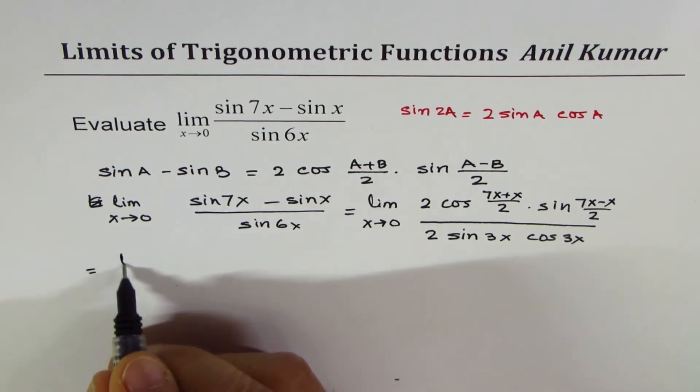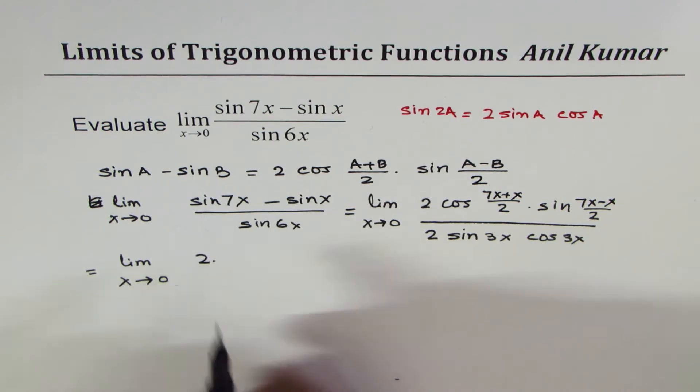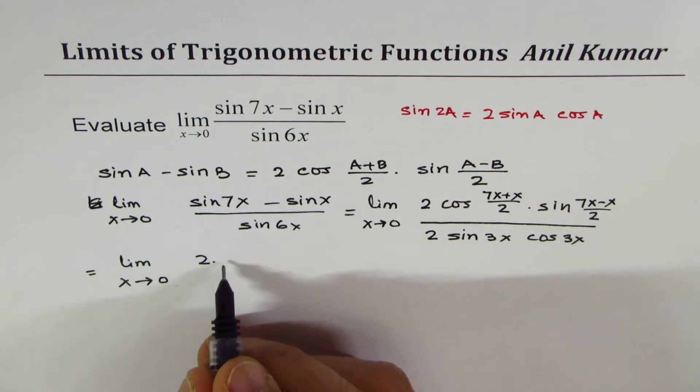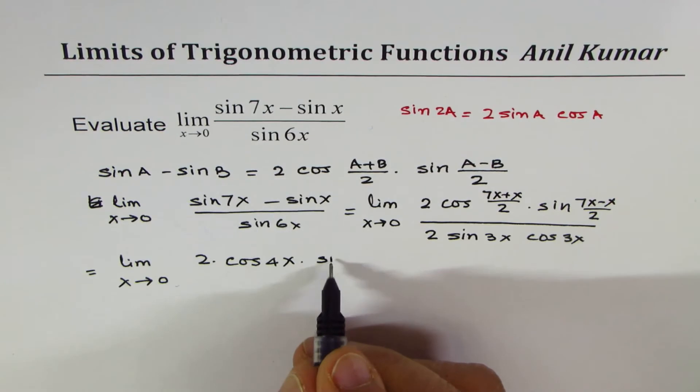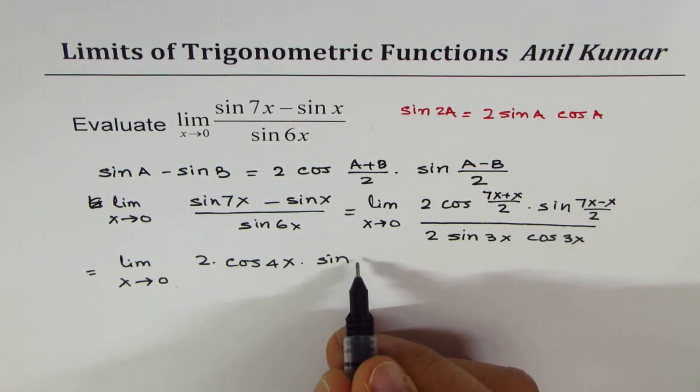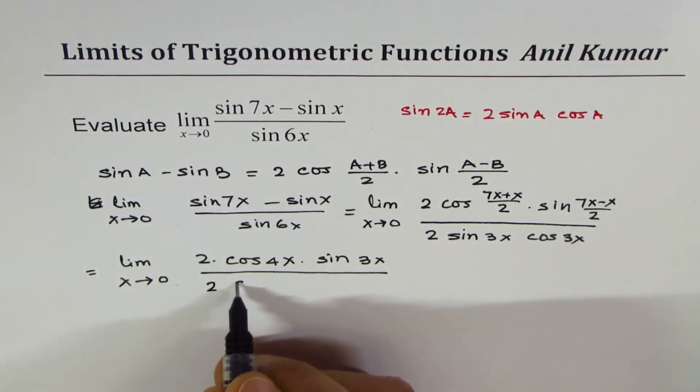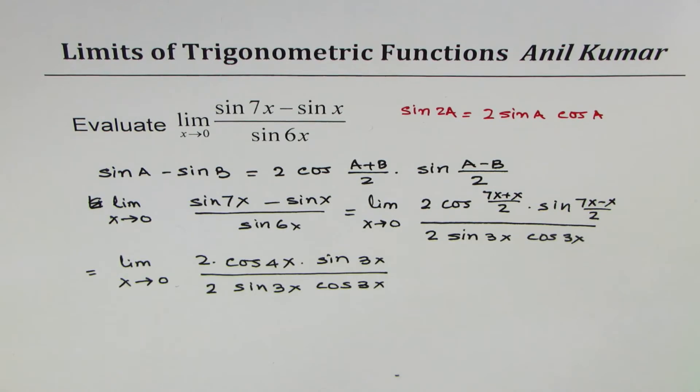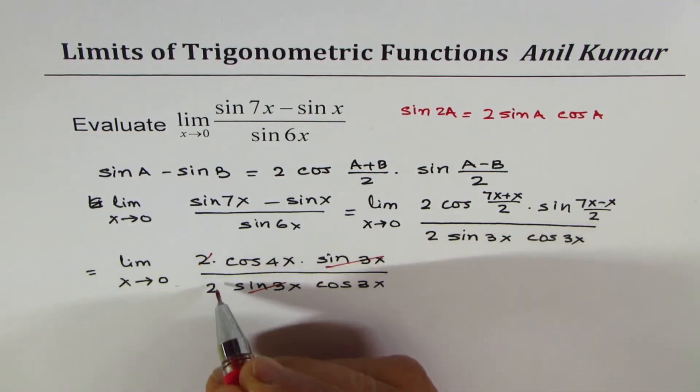We can rewrite in a simpler form. Limit x approaches 0, 2 times cos of 8 divided by 2 is cos 4x times sine of 6 divided by 2 is sine 3x, divided by 2 times sine 3x cos 3x. You can cancel sine 3x and cancel 2.